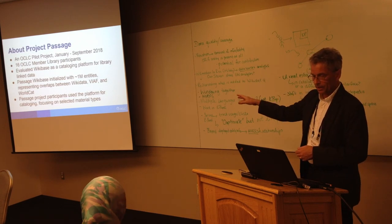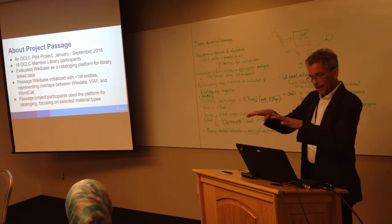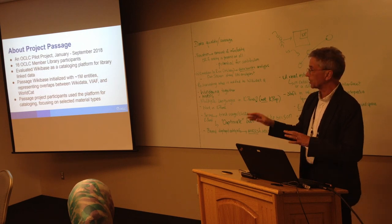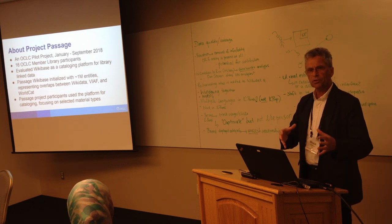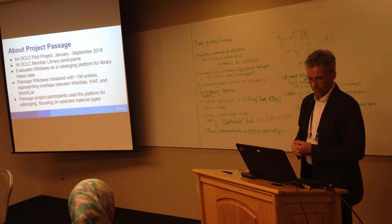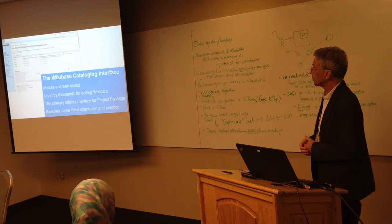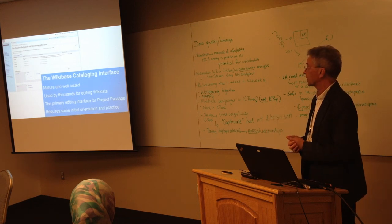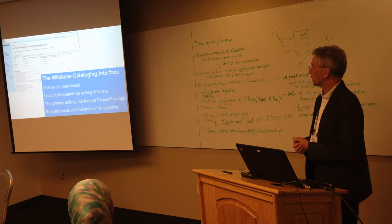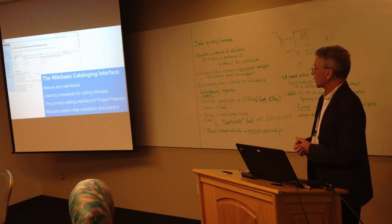This project was from last year. About a million entities were loaded into the Wikibase from an overlap of Wikidata, VIAF, and WorldCat. Project participants were asked to use this platform and evaluate special cases like cataloging maps, archival materials, and photograph collections. Generally, we found that as a cataloging interface, it takes some getting used to — it gets used by about 20,000 people a month for Wikidata, so it does get exercised quite a bit. It takes some orientation and practice, but once you have that, it's acceptable.